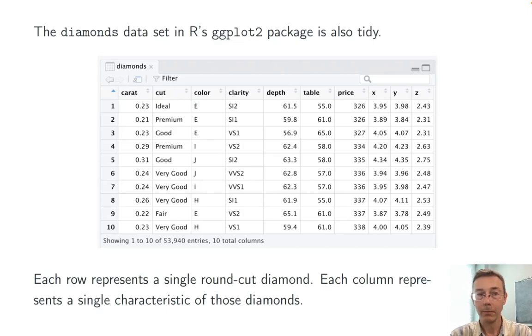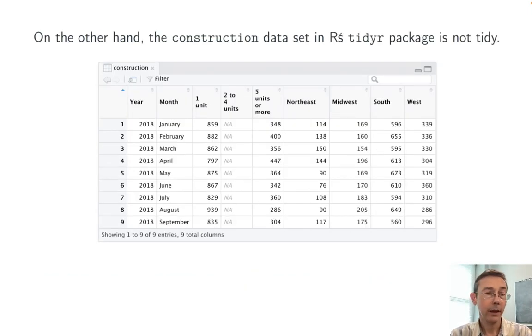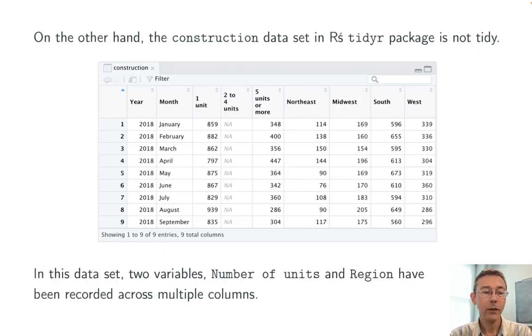A second example is the diamonds data set in R's ggplot2 package. In this data set, every row represents a single round cut diamond, and every column represents a single characteristic of each of those diamonds. On the other hand, the construction data set in R's tidier package is not tidy. In this data set, there are two variables that are spread across multiple columns, the number of units and the region.